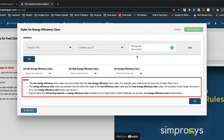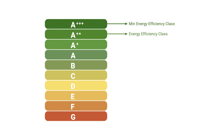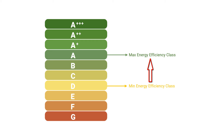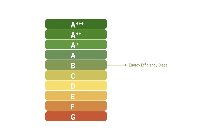There are a few guidelines which need to be followed in order to submit correct and high quality data for all the products in the feed. The min energy efficiency class value must be smaller than the max energy efficiency class value. For example, your energy efficiency class scale must run from A to D, rather than D to A. The value provided for energy efficiency class must be within the range of the value of min energy efficiency class and the max energy efficiency class. For example, if your range runs from A to D, your energy efficiency class value may not be G.